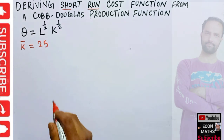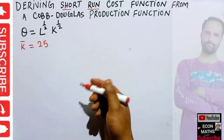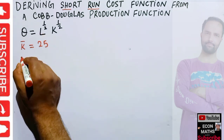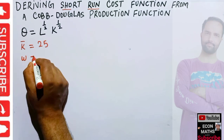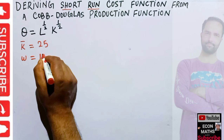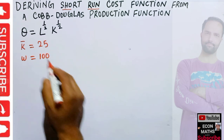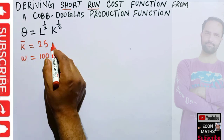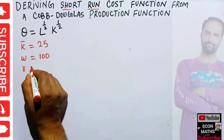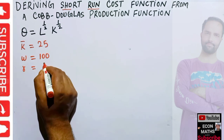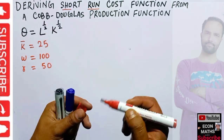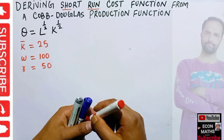We also need the input prices. Let us say the wage rate for labor is $100, and the rental rate of capital — that means the price of capital, denoted by r — is equal to $50. We need these values to derive the short-run cost functions for this Cobb-Douglas production function.